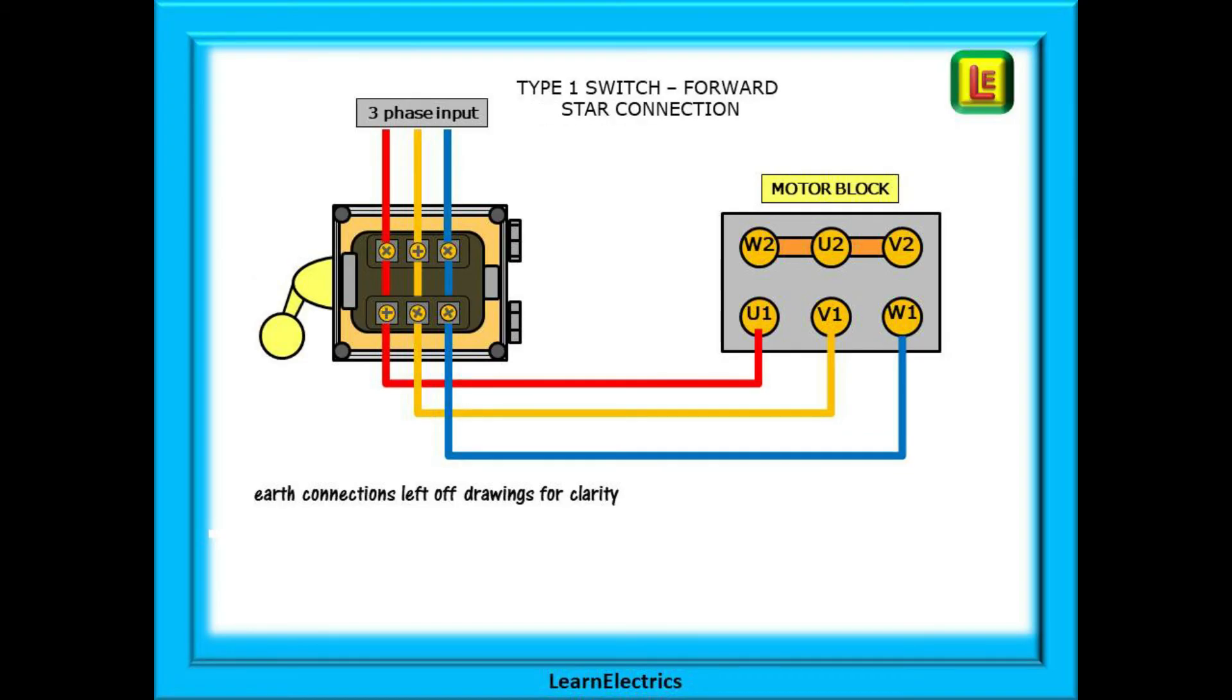In the forward position all the connections are straight through. L1 input goes to U1 on the motor. L2 to V1 and L3 to W1.